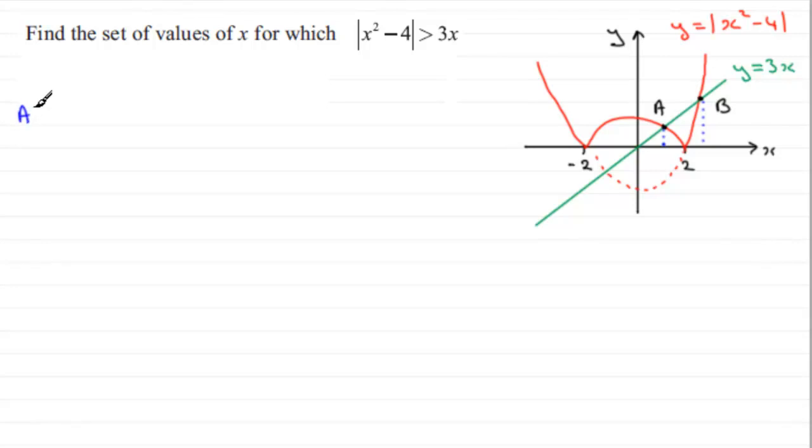What we're going to do is we're going to look at trying to find out the coordinates of A. And at A we're looking at this part of the graph of the parabola, where it intersects y equals 3x. Now this parabola here would be the negative of x squared minus 4. So what we've got is minus x squared plus 4 is going to be equal to 3x. So if we solve this in the usual way, just by rearranging it, we're going to have x squared plus 3x minus 4 equals 0.